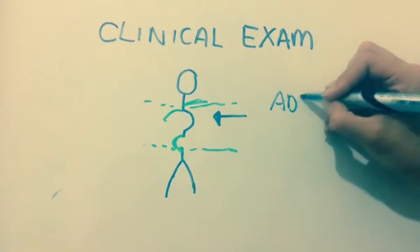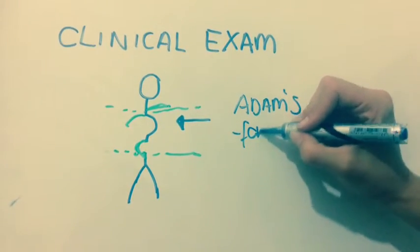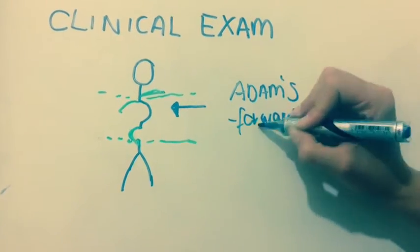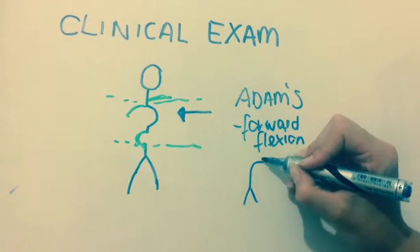Adams test: this is forward flexion of the spine. On standing, it will indicate a prominent rib hump.